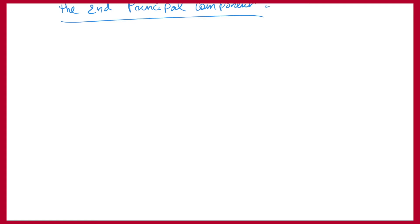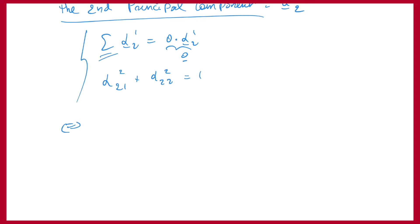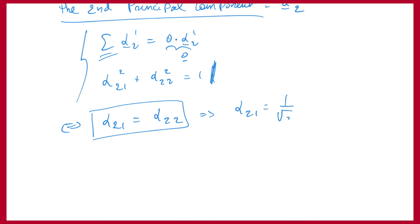To determine the second principal component alpha2, we solve: variance-covariance matrix × alpha2 = 0 × alpha2 = the zero vector, with the constraint that the norm of alpha2 equals 1. Plugging in the variance-covariance matrix, we find alpha2,1 = alpha2,2. Using the normalization condition, we get alpha2,1 = 1/√2 and alpha2,2 = 1/√2. So the second principal component is (1/√2, 1/√2).